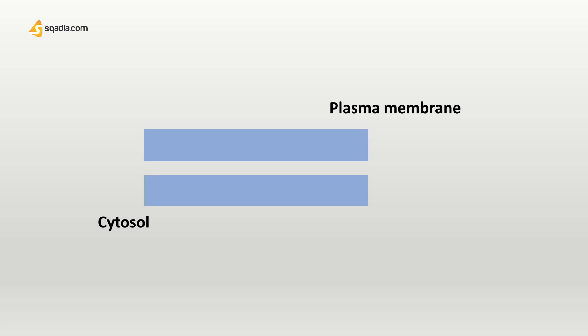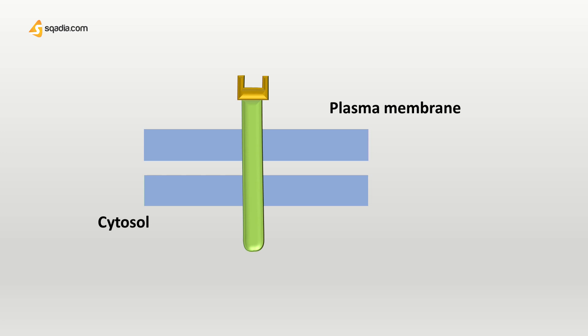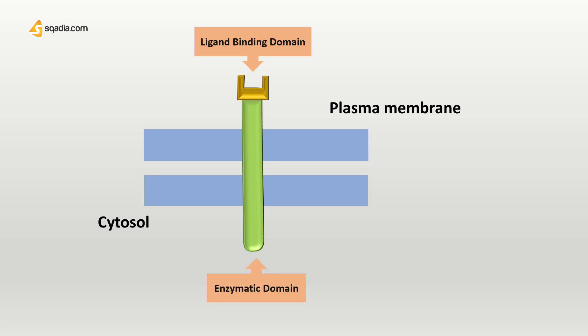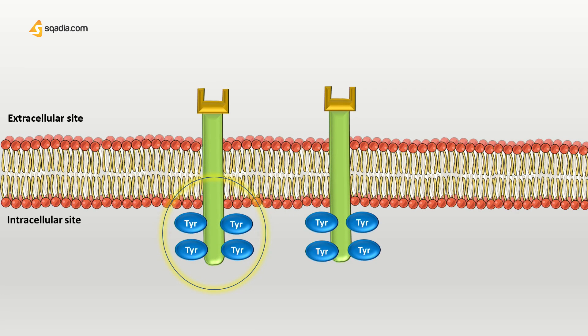First, generally explaining the structure of enzyme-linked receptors. As clearly visible on the top is our ligand-binding domain — this being the extracellular portion. Moving downwards to the intracellular side is our enzymatic domain, probably the functional domain. The extracellular side can bind a ligand which will cause the intracellular side to act as an enzyme.